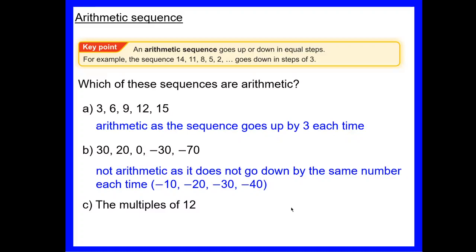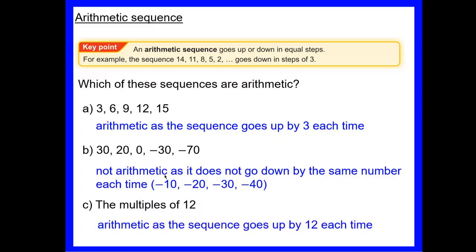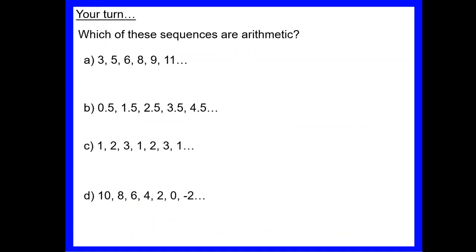Our last example: multiples of 12, which means the 12 times table. Write down 12, 24, 36, 48 and find out if it's going up by the same amount. It is arithmetic as it goes up by 12 each time, and that's true for all of our times tables — all times tables are arithmetic sequences.